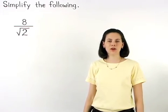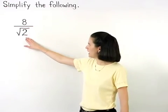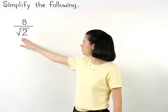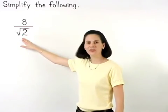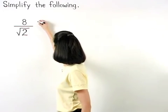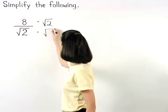However, remember that we also cannot have a radical in the denominator of our final answer. So, since we have the square root of 2 in the denominator, to get rid of the radical, we multiply the numerator and denominator of the fraction by the square root of 2.